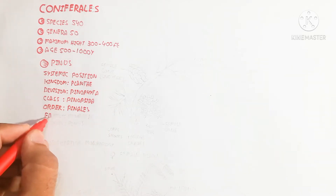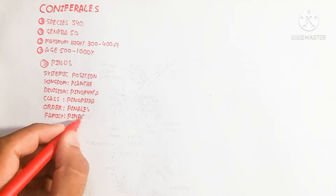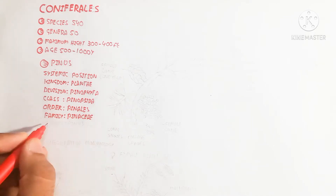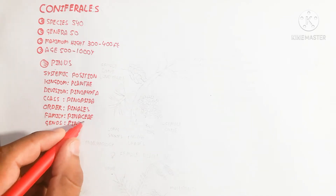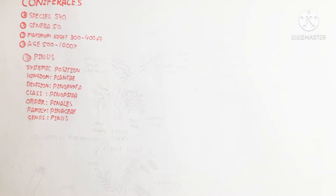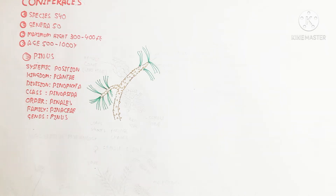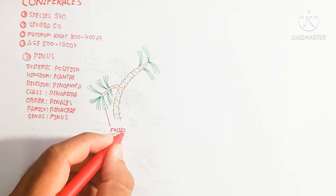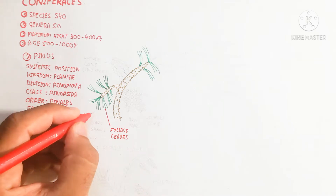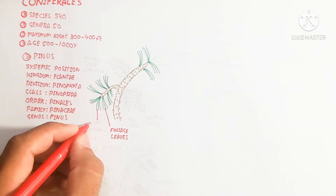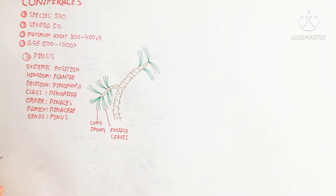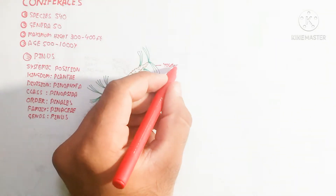The systematic position of Pinus is: Kingdom Plantae, Division Pinophyta, Class Pinopsida, Order Pinales, Family Pinaceae, and Genus Pinus. The vegetative structure of the plant contains foliage leaves, which are basically needle-like in structure.